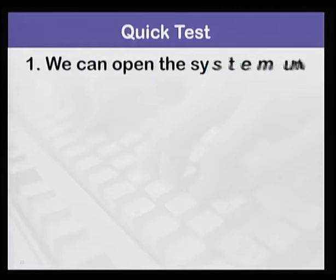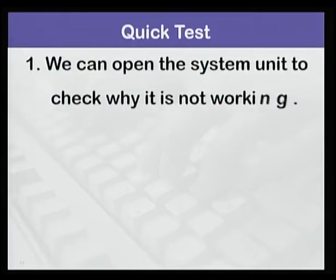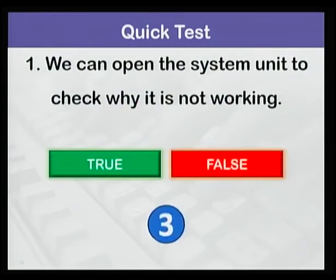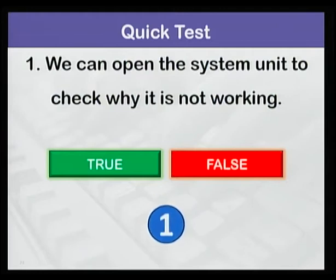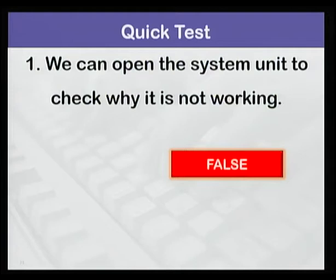Now let us have a quick test to check how well you have understood the lesson. You will see a statement on the screen — read the statement and answer true or false. Number one: we can open the system unit to check why it is not working. Of course, it's false. First, there is a risk of electrocution. Secondly, you are not trained to do this.